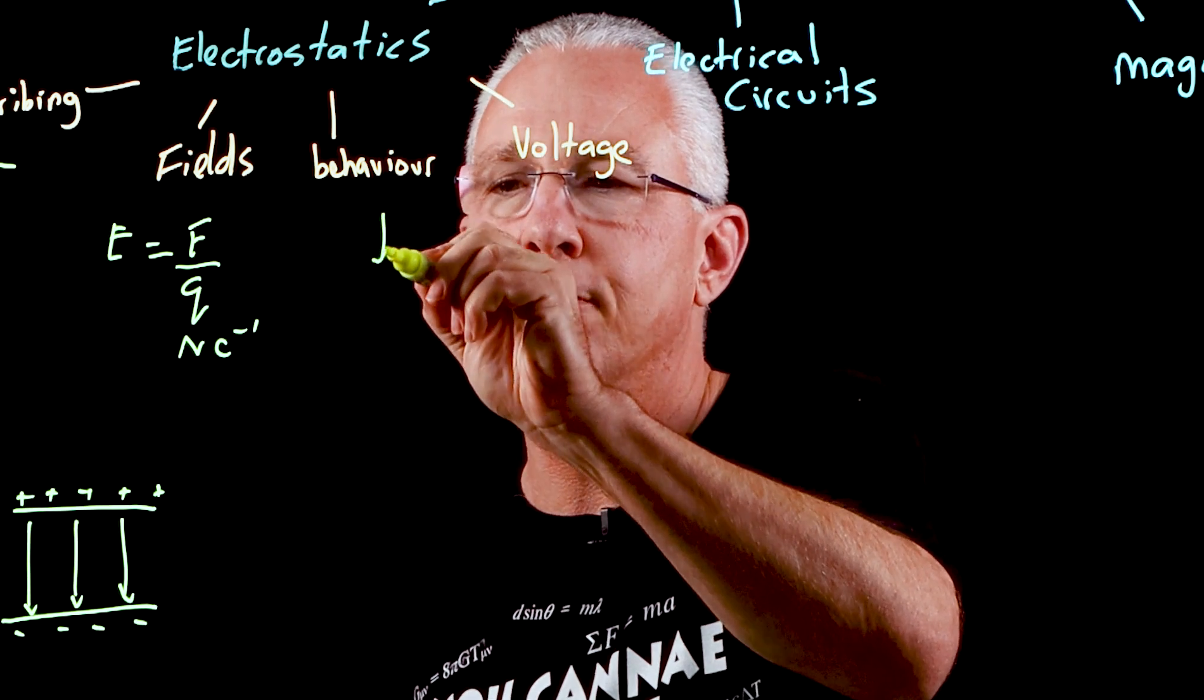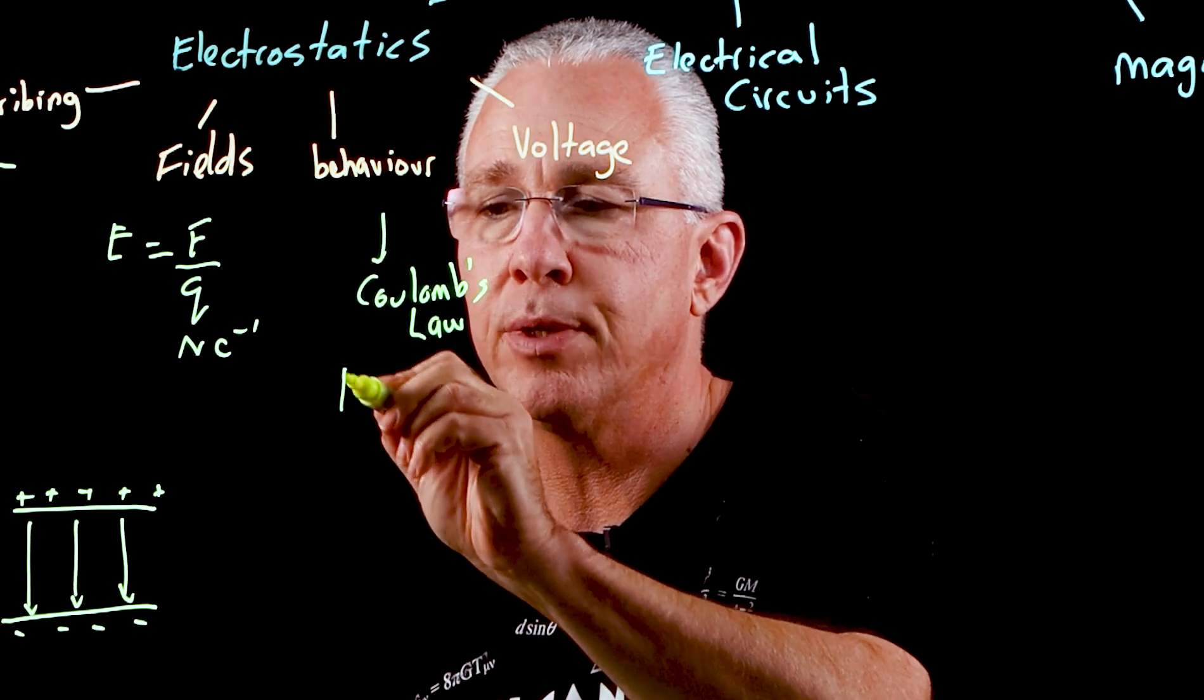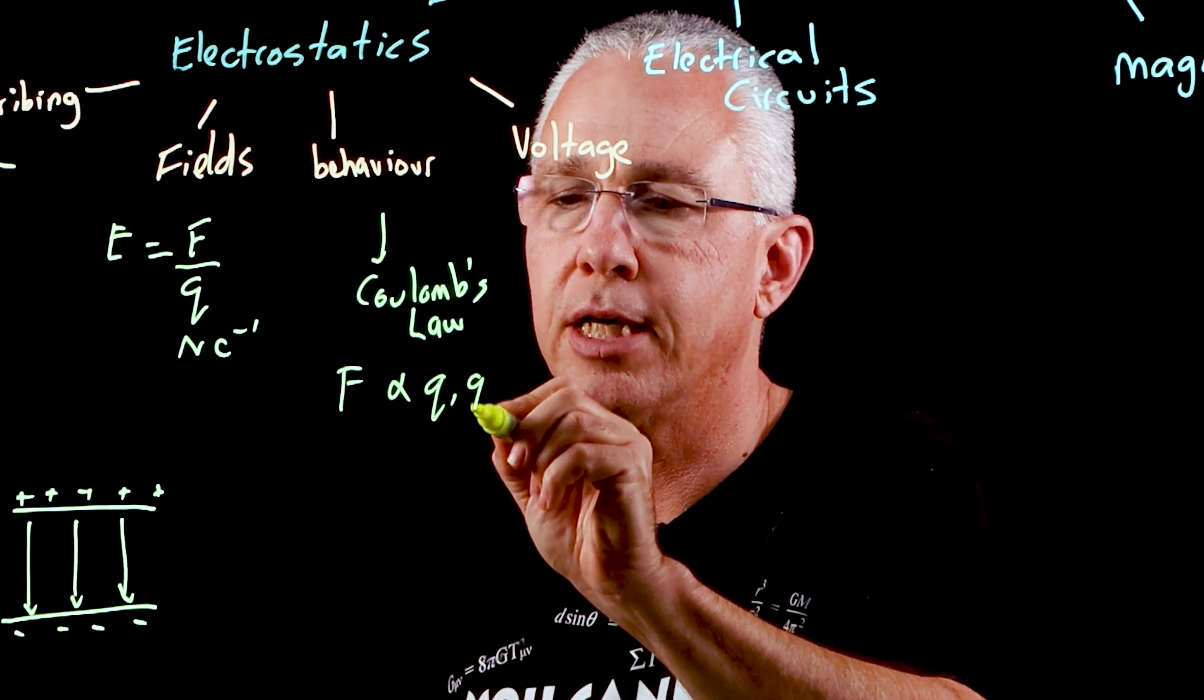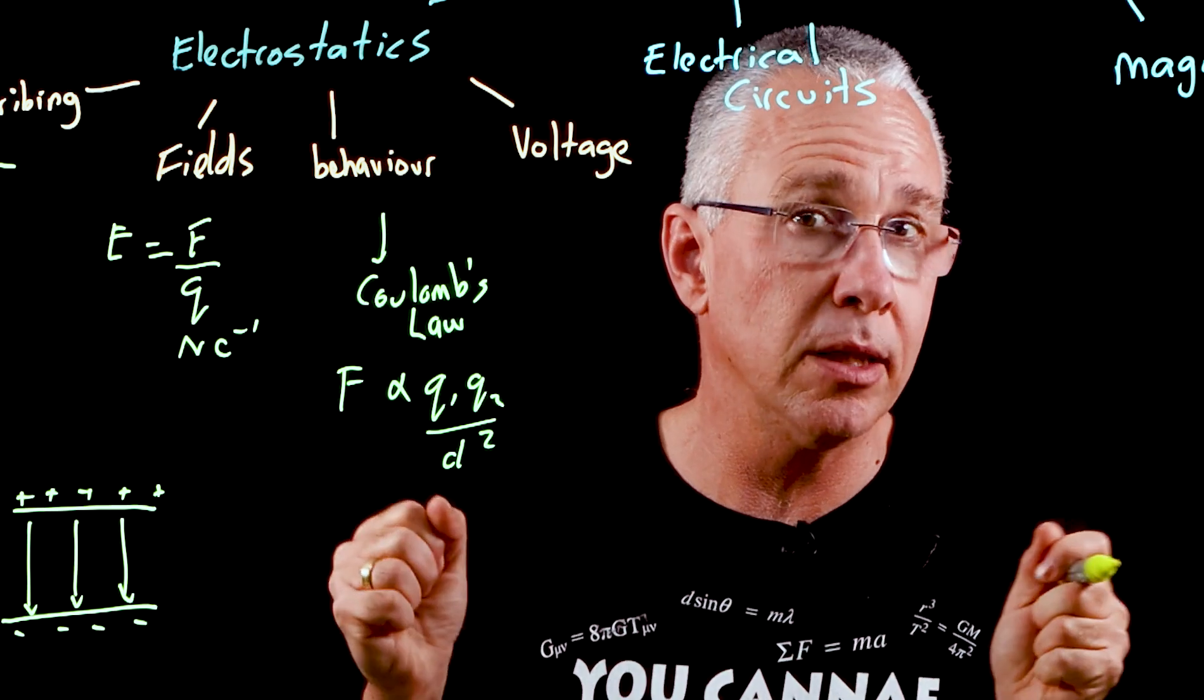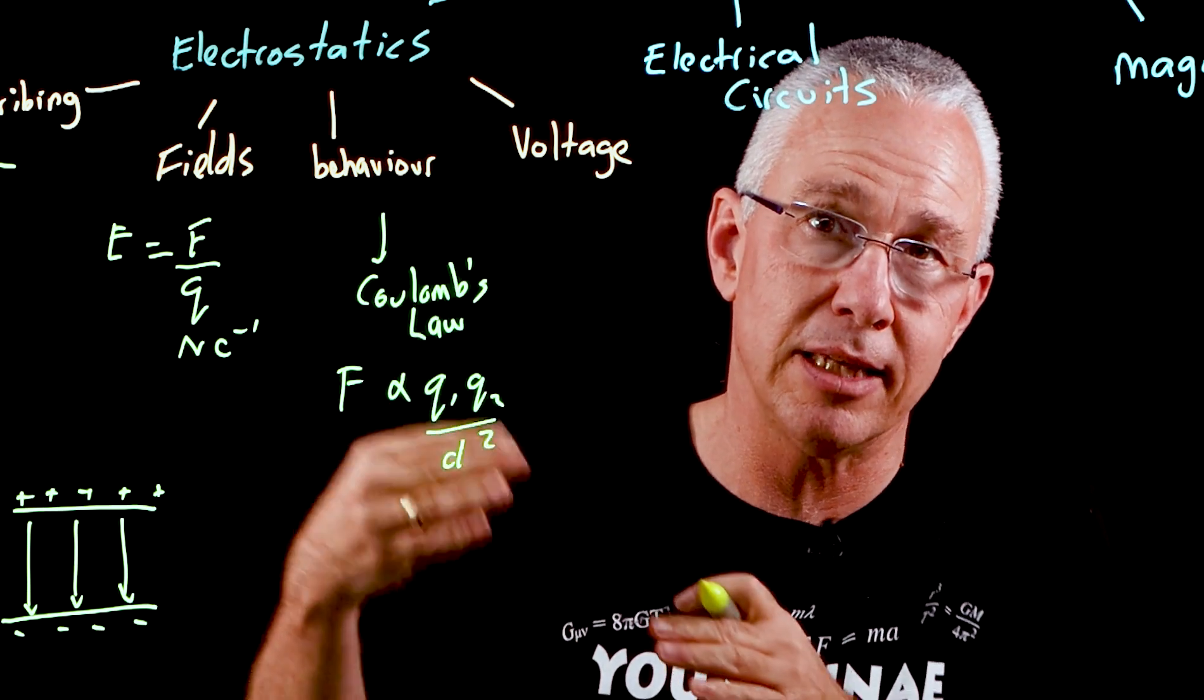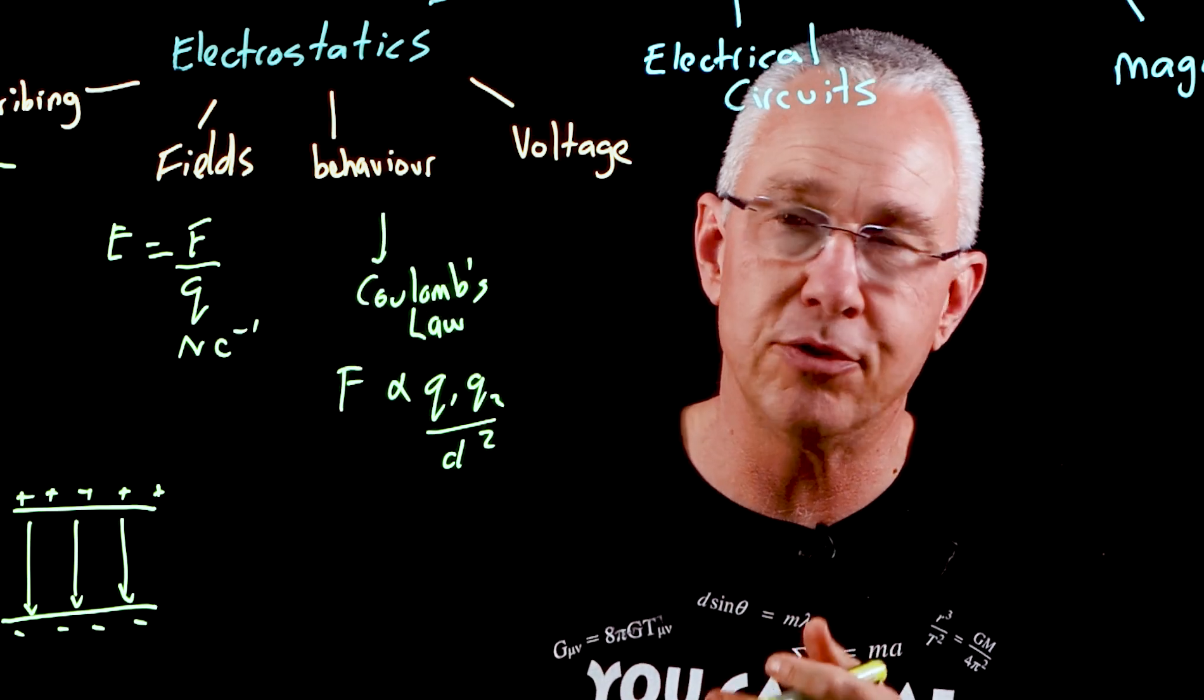That leads us to the concept of Coulomb's law. Coulomb's law simply says that the force between any two charges is proportional to the product of the charges and inversely proportional to the distance between them squared. So now we can talk about two charges that will repel and attract and behave differently.